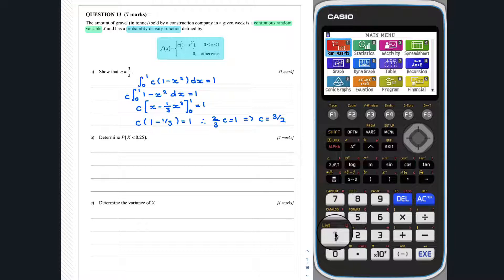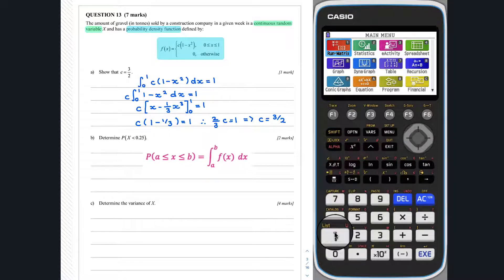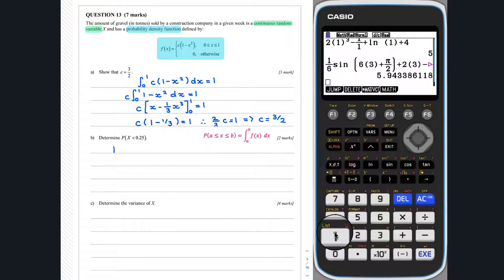Question 13, part B. For a continuous random variable with PDF f of x, we have the probability that x lies between a and b is equal to the integral of f of x from a to b. We can make use of this to evaluate the probability that x is less than 0.25.